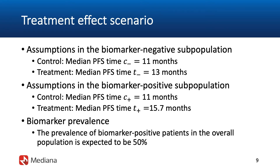Specifically, looking at the assumptions for the median PFS time in the biomarker negative subpopulation, the treatment is expected to provide some improvement over the control arm, but that improvement is probably just borderline clinically relevant — the median PFS time is only expected to go up from 11 months to 13 months. However, in the subset of biomarker positive patients, those patients' positive biomarker status is highly predictive of a stronger beneficial effect. In this case, the median PFS time in the control arm is expected to be 11 months and is expected to improve all the way up to 15.7 months.